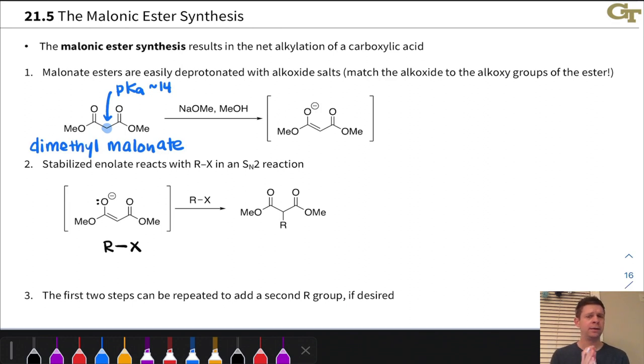Now, one quick note here about generating these stabilized enolates of malonate esters. It is very important, and this is also going to be true in the acetoacetic ester synthesis, that the alkoxide base used matches the alkoxy group of the esters. So notice here we have a dimethyl malonate ester. It is very important that we use methoxide here. If we don't do that, then the alkoxide base can displace the methoxide anion built into the starting ester. That's called transesterification, and then we get a nasty mixture of products. So this is actually important to make sure that that alkoxide matches the alkoxy group built into the malonate ester.